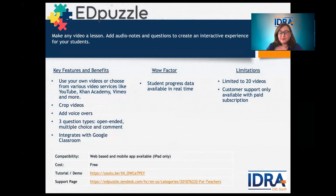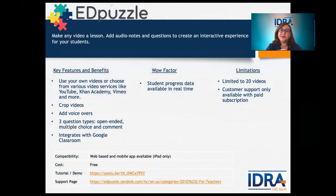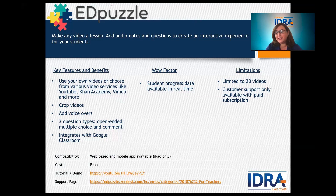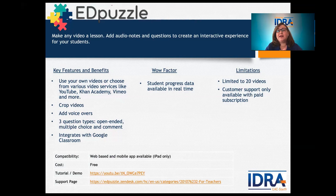Edpuzzle is a video lesson app. I love it because I'm a visual learner. Key features include using your own videos or existing videos from YouTube, PBS, or Khan Academy. You can crop videos to just the section you need — if a video is 30 minutes long but you only need three minutes, Edpuzzle lets you shorten it. You can also add voiceovers, which is great right now during the pandemic so students hear your voice rather than a stranger's.